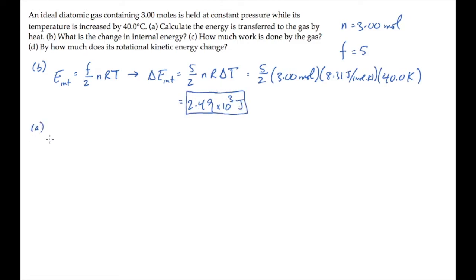Part A asks us for the energy transferred by heat. That's Q and it equals the number of moles times the molar specific heat at constant pressure times delta T. The molar specific heat at constant pressure equals Cv plus R.